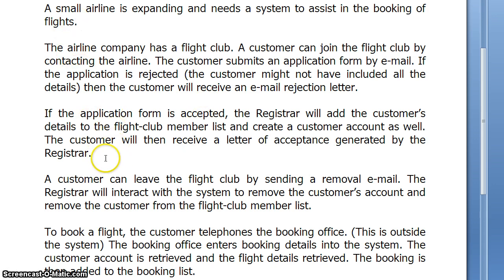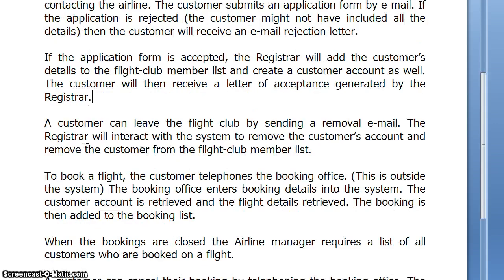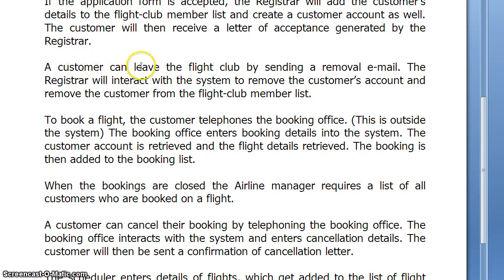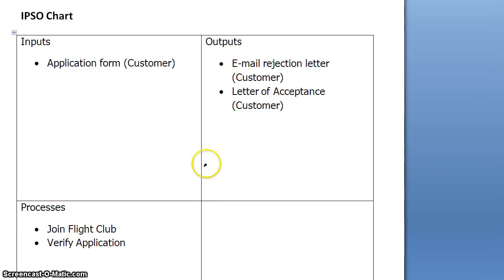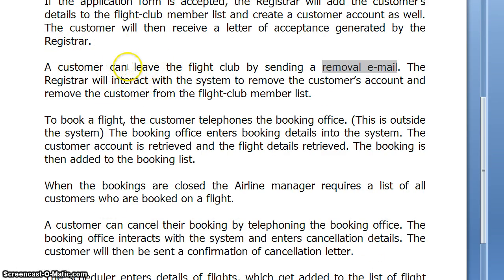So we've covered the first few paragraphs, looking at inputs, processes and outputs. A customer can leave the flight club by sending a removal email. The registrar will interact with the system to remove the customer's account and remove the customer from the flight club member list. So the thing being input here is the removal email — input: removal email, again from the customer. The process is: leave the flight club.